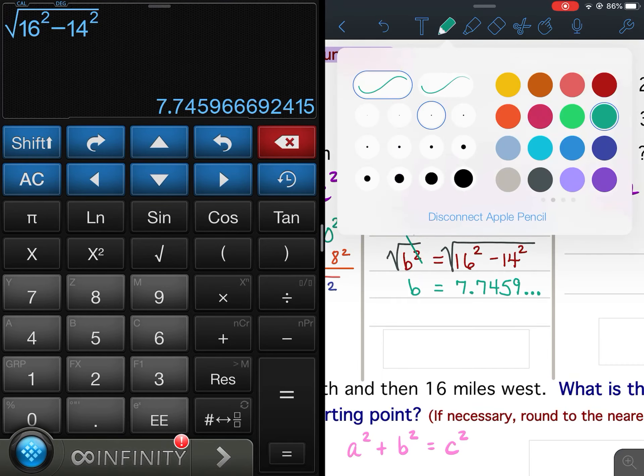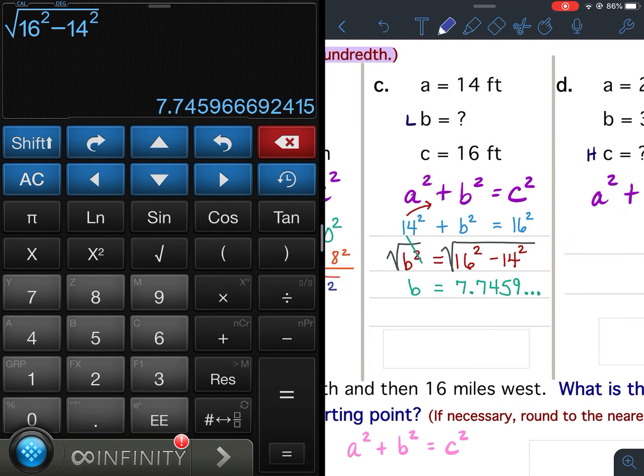Now we are going to round it. So now, because we're rounding, it's not going to be equal anymore. It's going to be approximate. And we're rounding it to the hundredths. So we're rounding it to that four. So would the five make the four stay a four or go up to five?